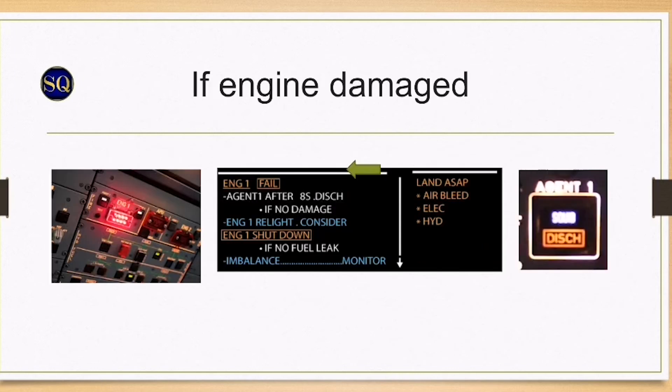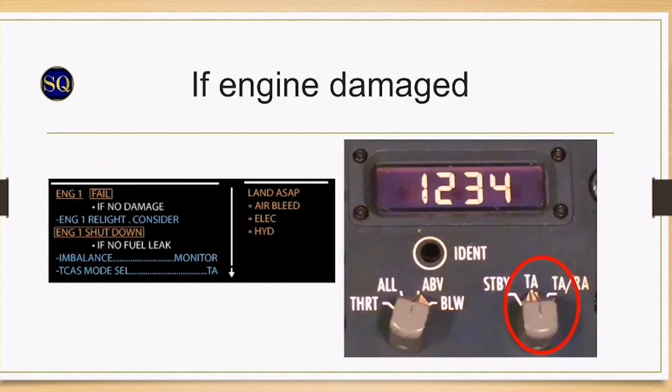If engine is damaged, fire pushbutton push. This isolates the engine from fuel, hydraulic power, electrical power, and bleed air, and arms the squibs. The ECAM countdown allows airflow to decrease, reducing nasal ventilation and increasing the effect of the agent. Agent one discharge. TCAS is set to TA as aircraft performance may not be capable of RA orders.